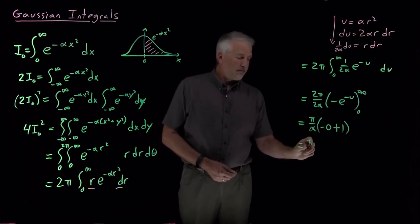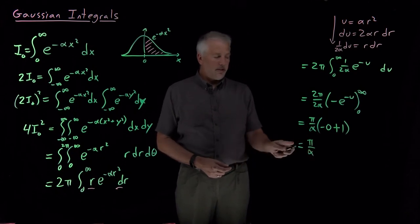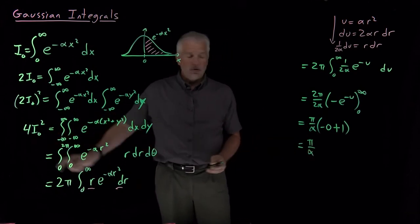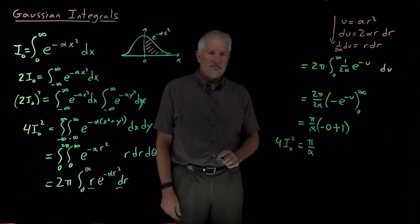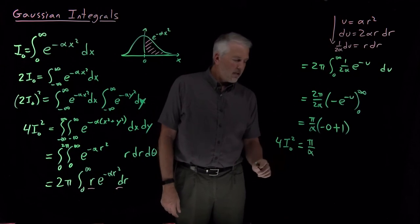Multiplied by just 1, and the thing that this is equal to, that what I'm solving for, is this 4 I naught squared. So we were interested in the value of I naught.